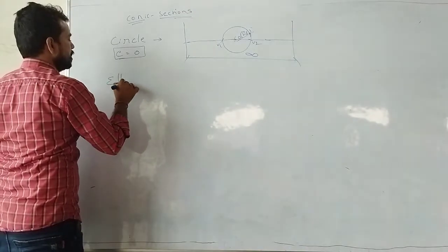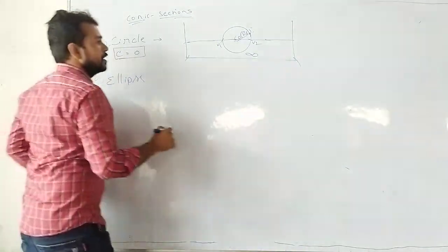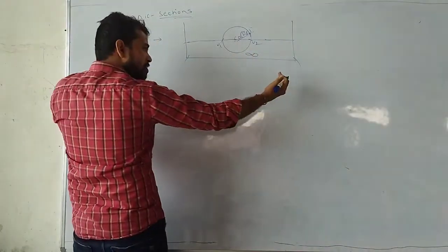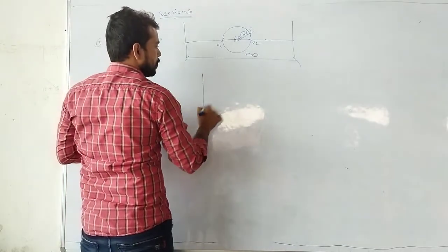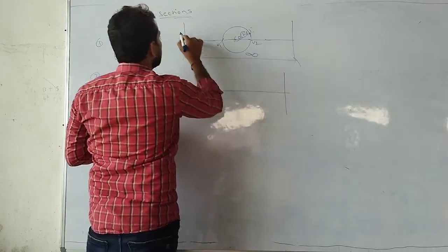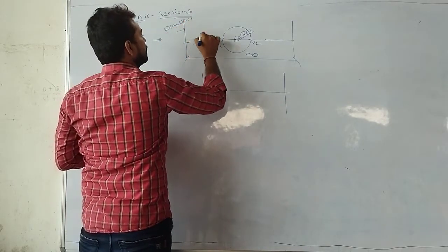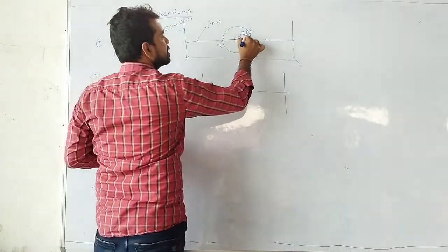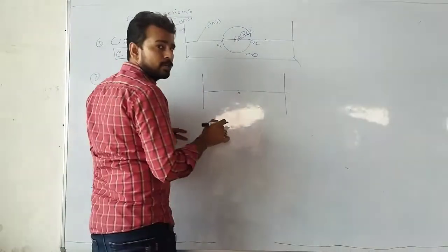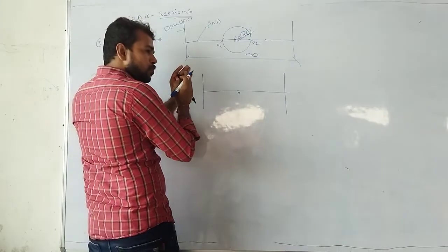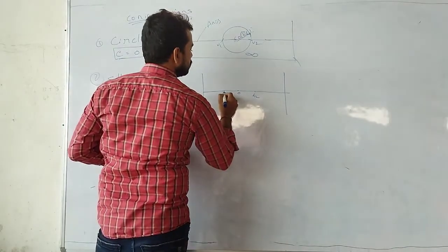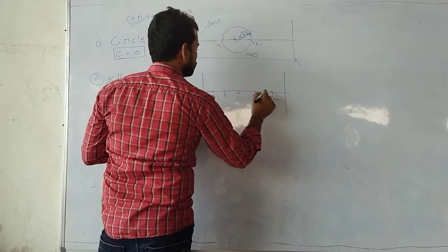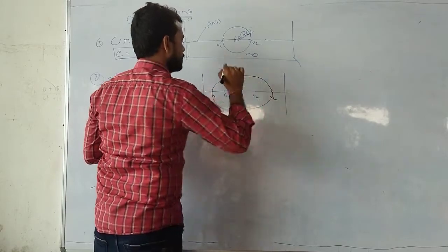A circle looks like this. For an ellipse, the directrices come closer. Two directrices are at infinity distance for a circle, but for an ellipse they come closer. When the directrices come closer, the foci F1 and F2 move apart, while O stays. V1 and V2 also move. This is an ellipse.